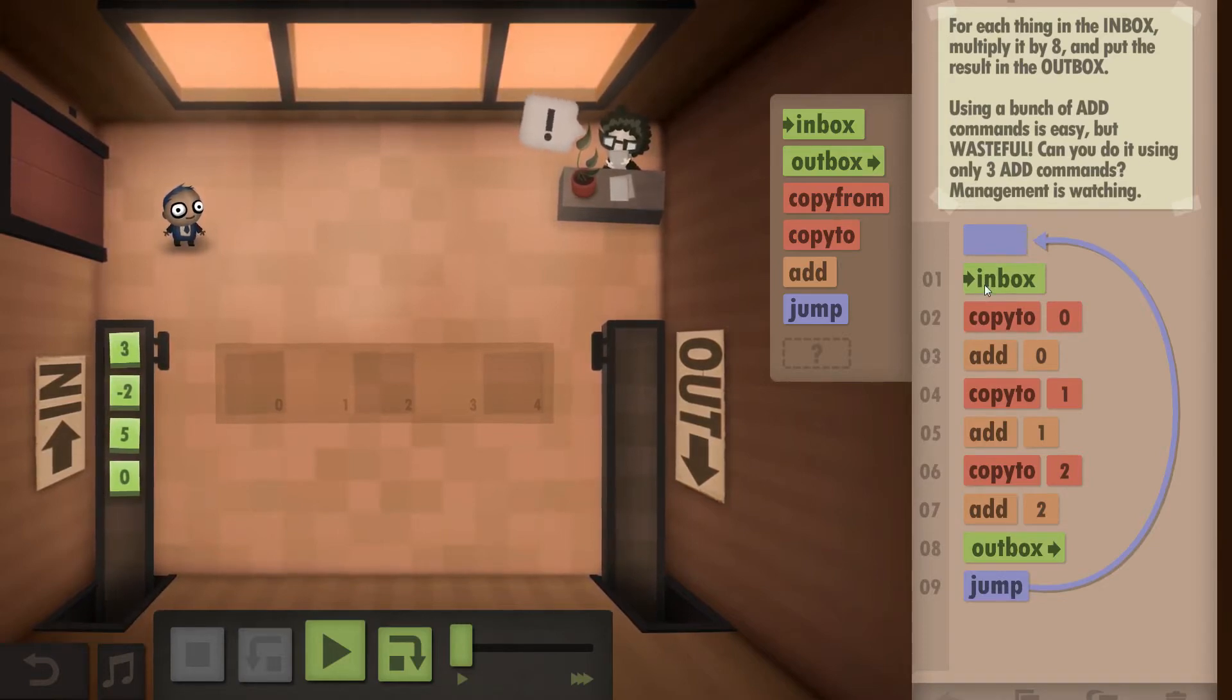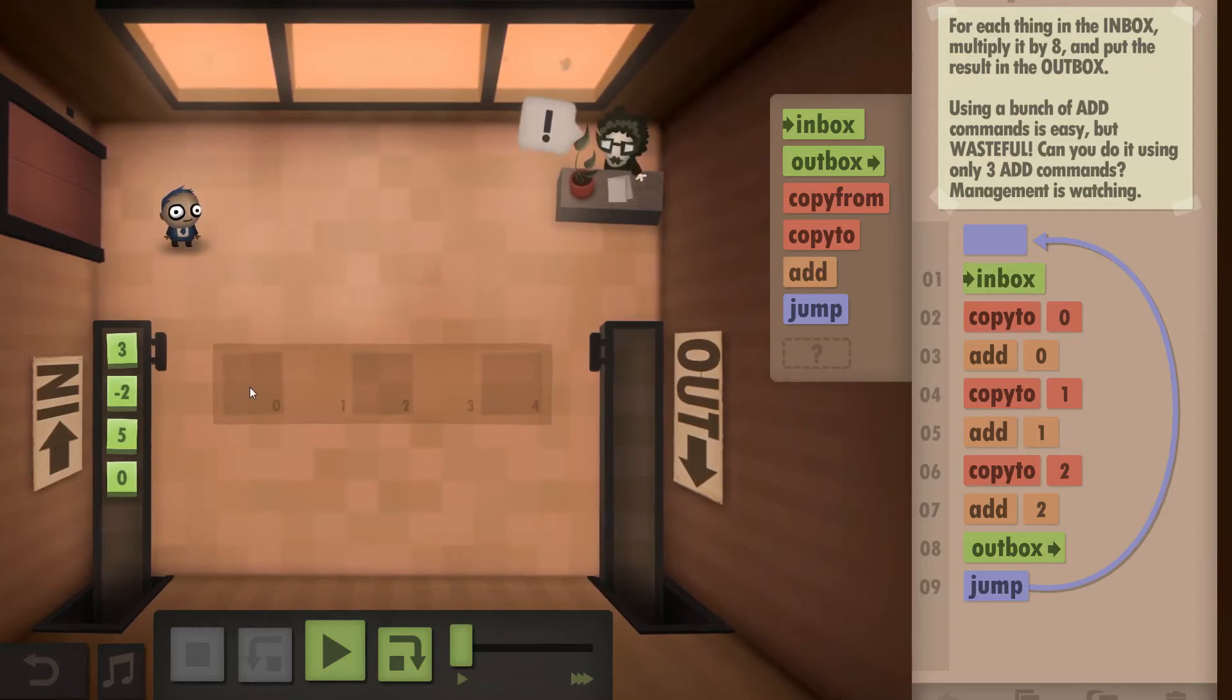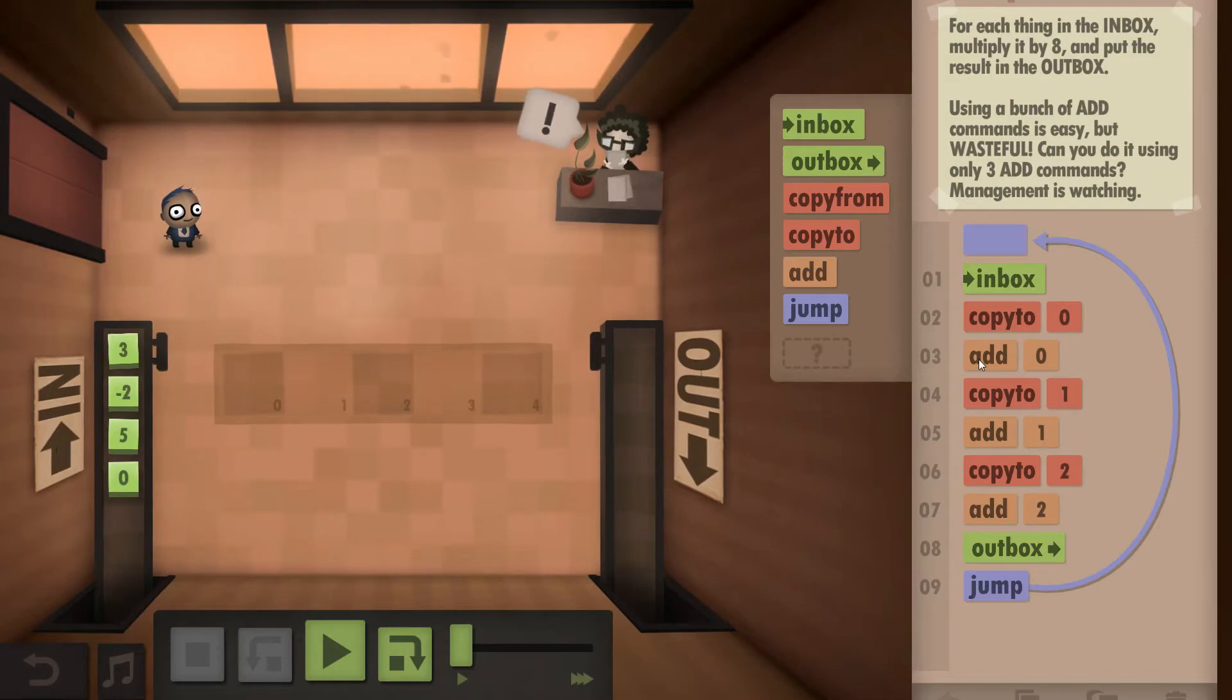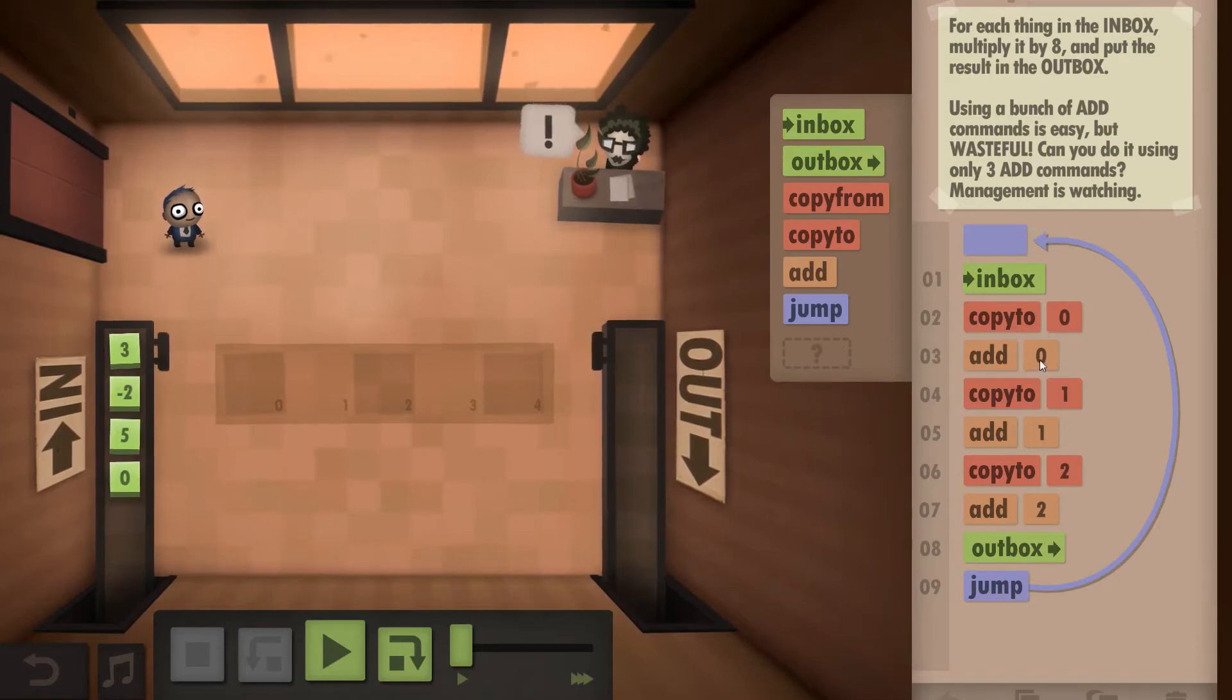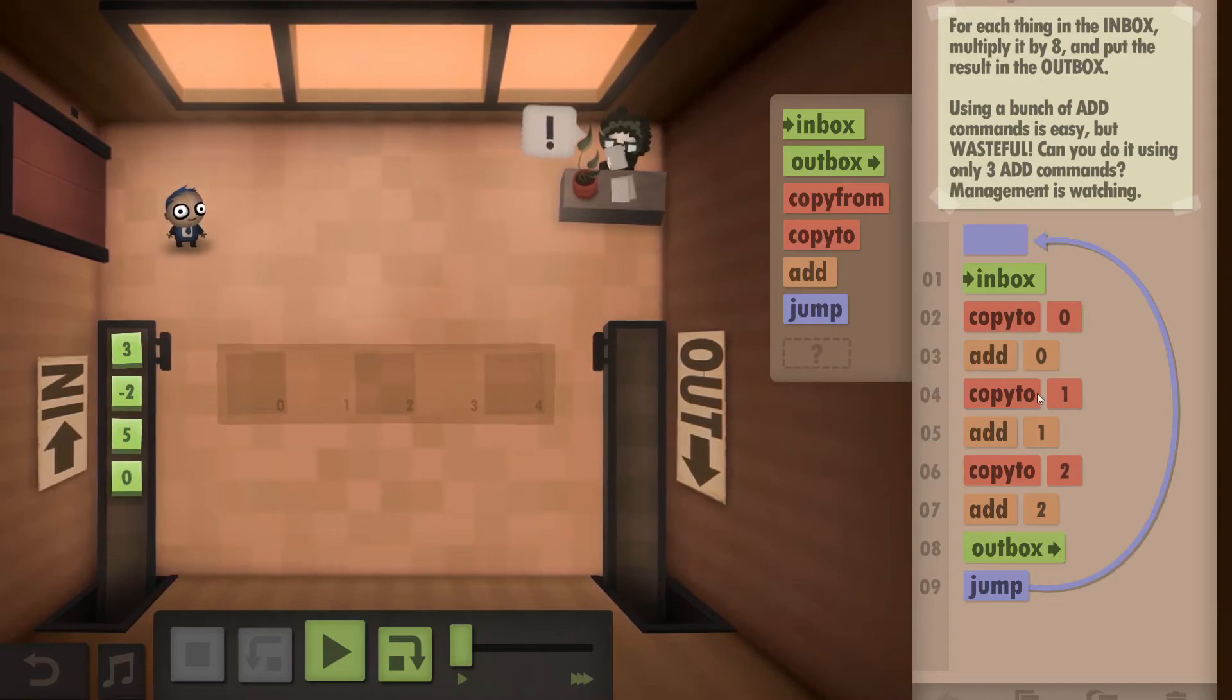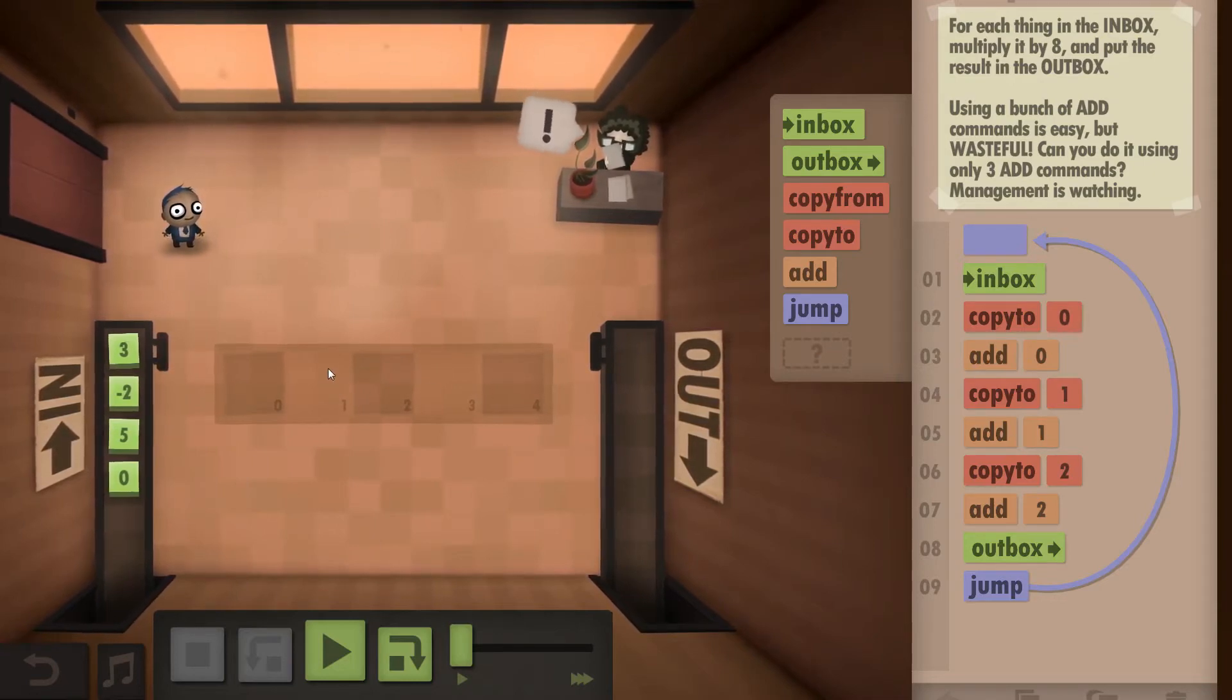So what I did is take from the inbox, write to 0, so we have times 1 in this field. Then we add 0, the input itself, to make this times 2. Then we add the times 2 to the times 2, making it times 4, writing that to field 2.